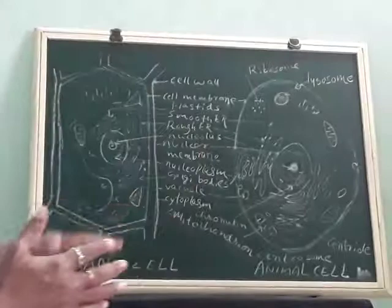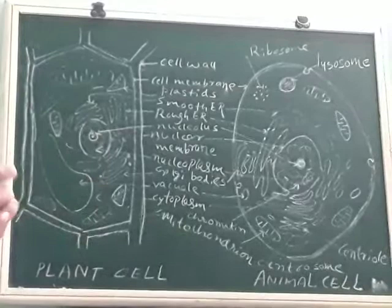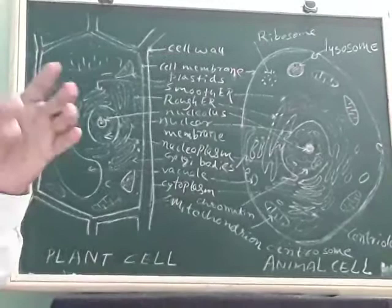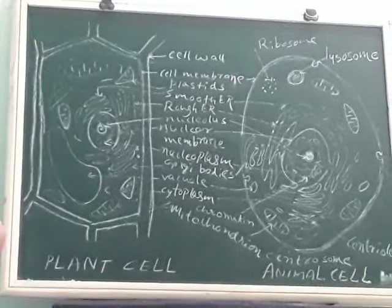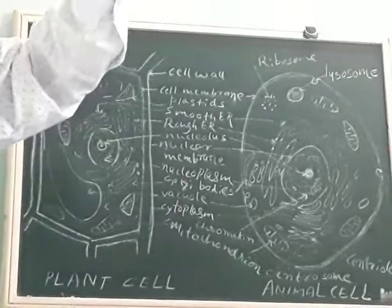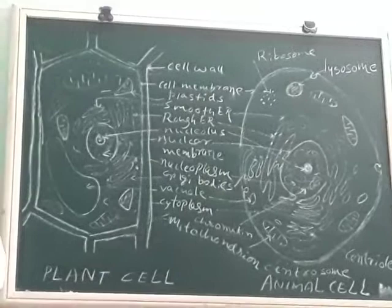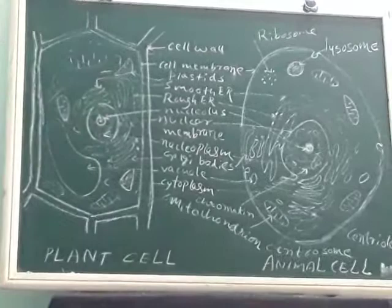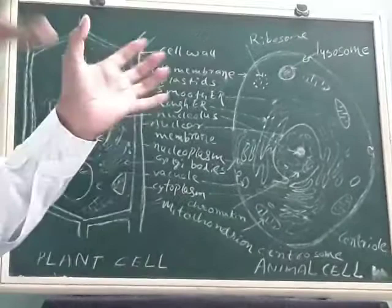The size of the cell is very small — we cannot see most cells with our naked eyes. The smallest cell of any living organism is about one by thousandth of a millimeter, which is called one micron. The smallest cell is that of a virus. The biggest cell is the ostrich egg — very big, 15 centimeters long and 18 centimeters wide, and it is a single cell.